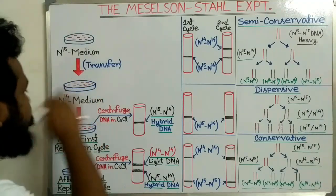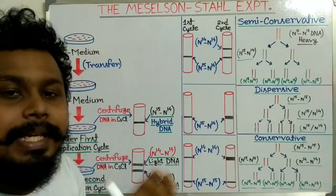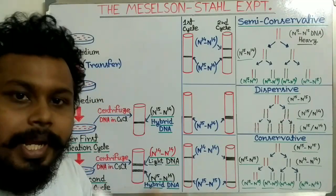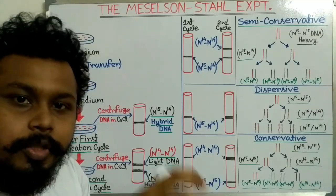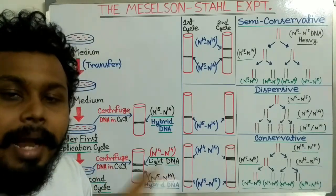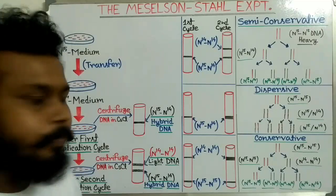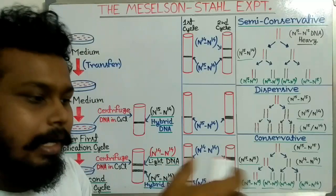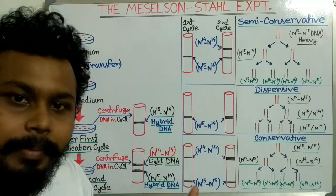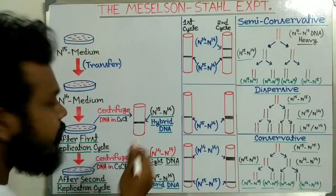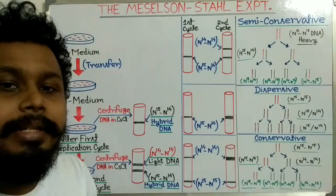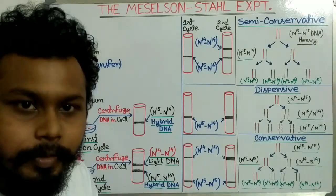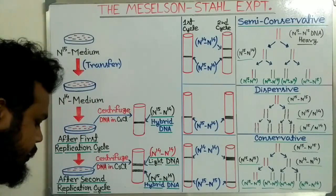After each generation of growing in this N14 medium, they collected the bacteria, broke them down, and isolated the DNA from those bacteria. Then that isolated DNA was run in a density gradient centrifugation — that is, cesium chloride density gradient centrifugation.